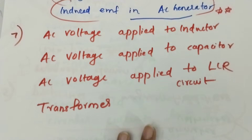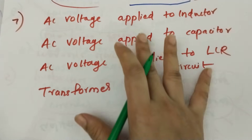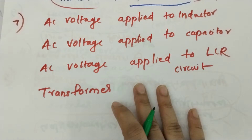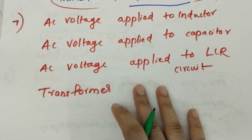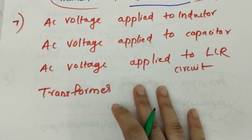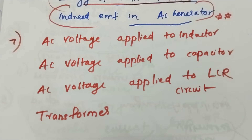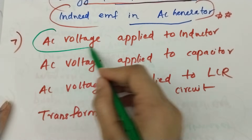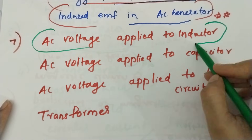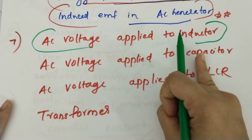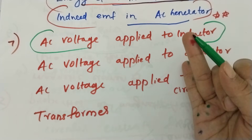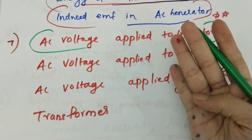In this chapter, we will not discuss the topic of alternating current in full. We will discuss the high-weightage of alternating current, but we will not discuss the same questions. This is the definition of alternating current. You will learn AC voltage applied to inductance — the current, phase diagram, graph, and power.